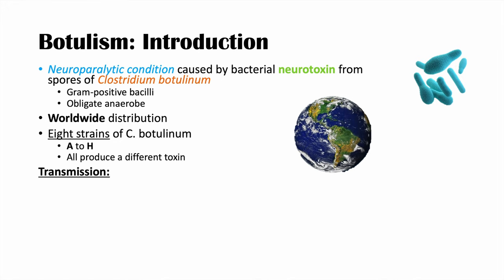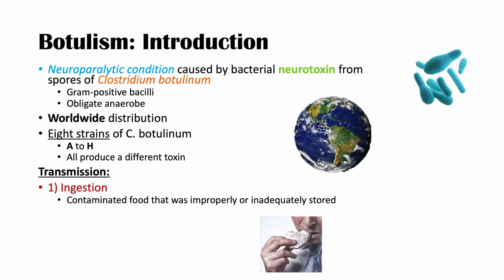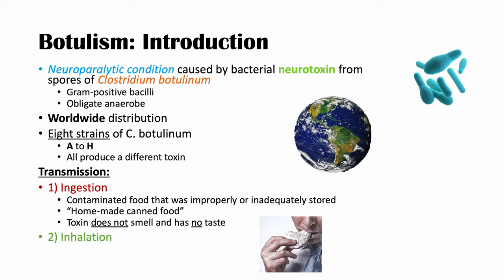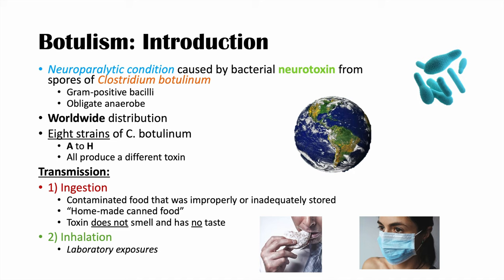How we actually get botulism occurs via a few different routes. One of them is through ingestion — ingesting contaminated food that oftentimes was improperly or inadequately stored, such as canned food, often homemade canned food that was not properly pressurized and heated to destroy the bacteria or spores. The problem is if you ingest the toxin from this bacteria, you don't actually know it because it doesn't have a particular smell or taste. A second way is through inhalation, which is very rare and only occurs in laboratory settings. The third is through direct inoculation — a puncture wound where spores can enter into an open wound, which is also quite rare.